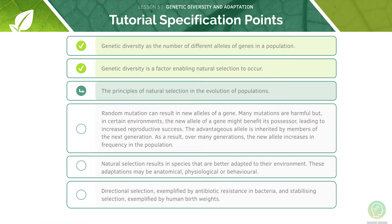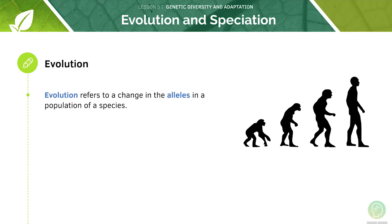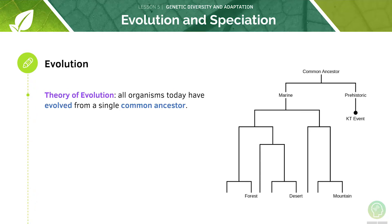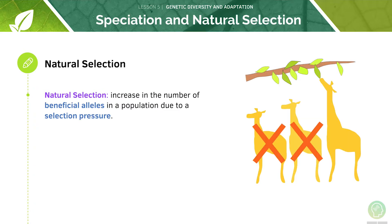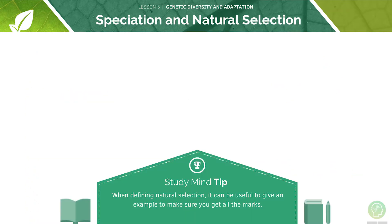Now we will look at the principle of natural selection. Evolution refers to a change in the alleles in a population of a species. The theory of evolution states that all organisms today evolved from a single common ancestor — for example, forest and desert animals originated from a common ancestor relatively recently, whereas forest and mountain animals originated from a common ancestor less recently. Natural selection is an increase in the number of beneficial alleles in a population, usually due to a selection pressure. When defining natural selection, it can be useful to give an example to make sure you get all the marks.